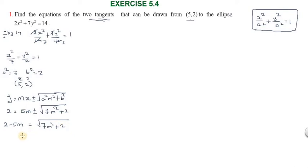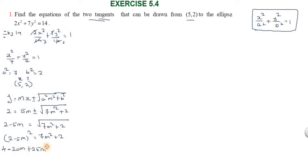Squaring both sides: (2 - 5m)² = 7m² + 2. Expanding using (a - b)² = a² - 2ab + b²: 4 - 20m + 25m² = 7m² + 2, which simplifies to 18m² - 20m + 2 = 0.